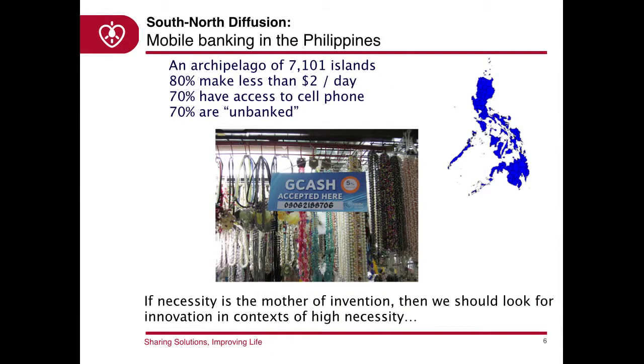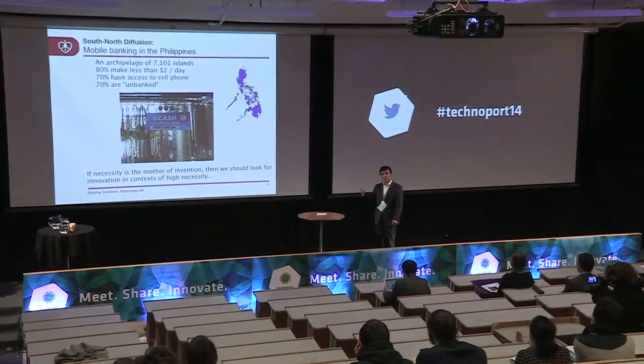We started understanding the role of users in developing economies and developing new solutions. We studied the beginning of mobile banking in the Philippines. The Philippines is a very big archipelago — 7,100 islands — and also a very poor country where people live on average with less than $2 per day. Remarkably, 80% of these people have a cell phone, while a similar percentage are what's called unbanked, meaning they don't have access to a bank. Sometimes going to a bank requires a day trip to another island.